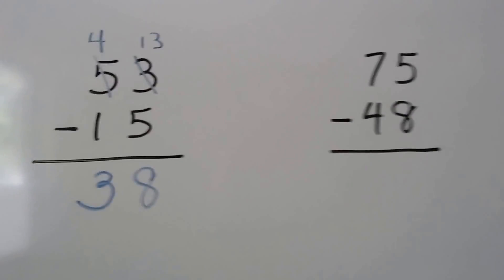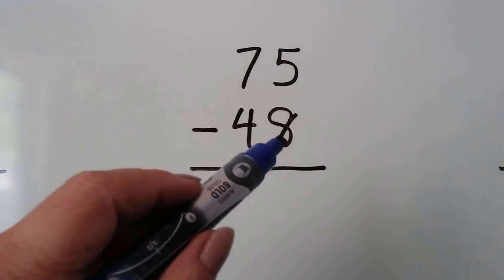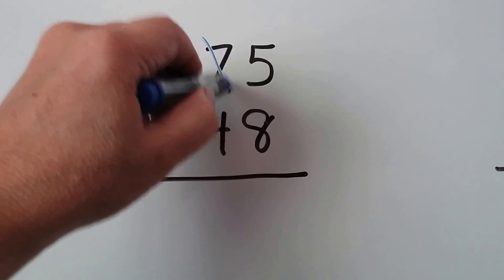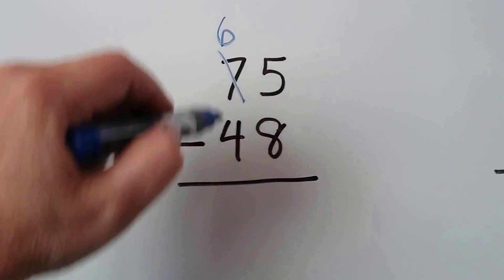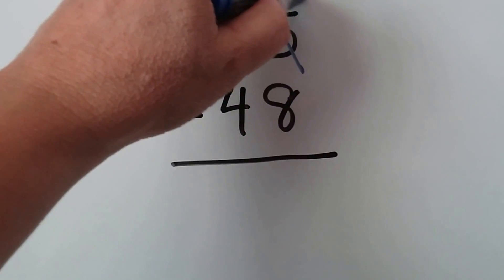Let's try it again. We have 75 minus 48. This 8 is larger than the 5, so we need to regroup. We take 1 away from the 7, it becomes a 6. We give the 10 to the ones place, so that becomes a 15 instead of a 5.